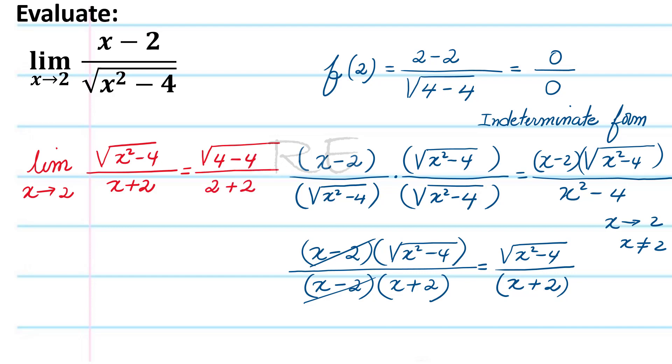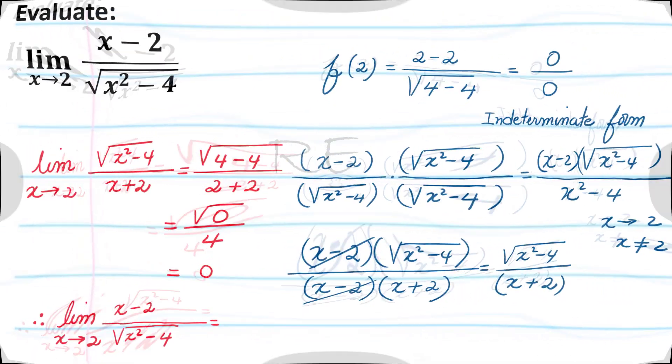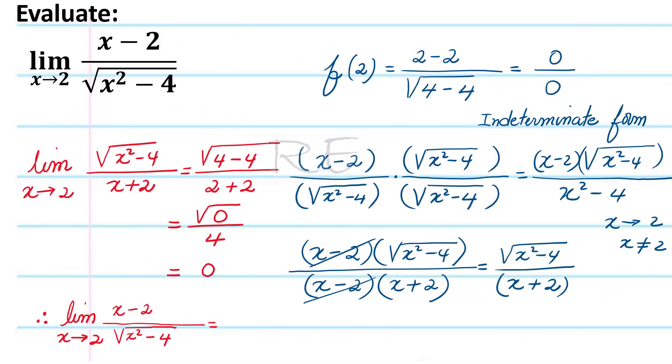It's square root of 4 minus 4 divided by 2 plus 2, which is 0 over 4, which is 0. In conclusion, the limit of x minus 2 over square root of x squared minus 4 as x approaches 2 is 0.